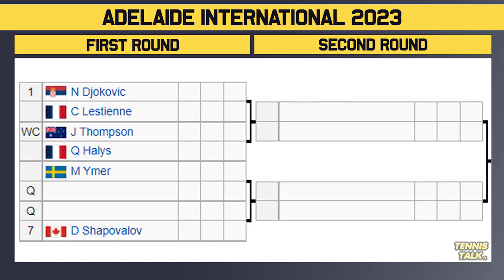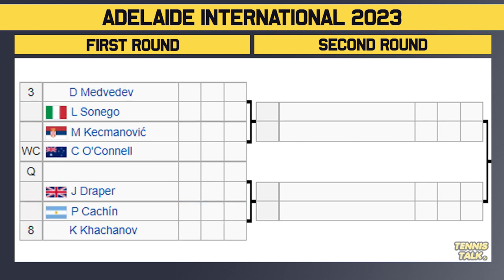Starting with the top section of the draw, you can see Djokovic playing as the number one seed against Lestian, the French player — a player he's never actually played before. So that'll be an interesting matchup for Nole in the first round. You can also see the number seven seed Shapovalov taking on a qualifier in the first round, and those guys could play in the quarterfinals if it plays out that way.